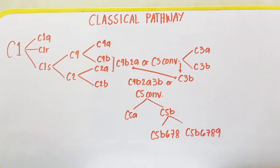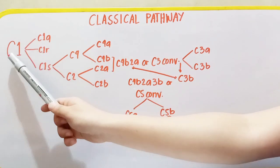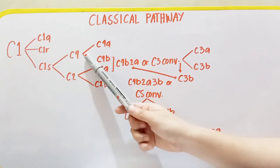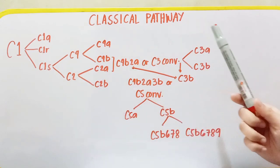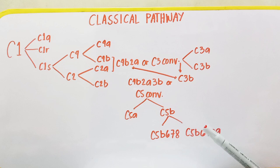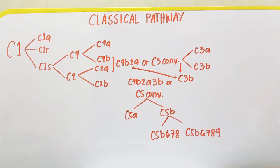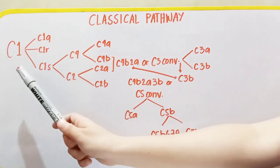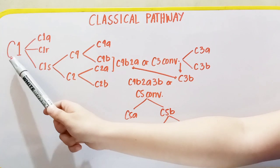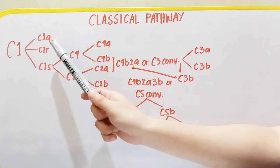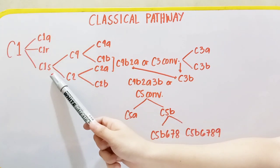Once the Classical Pathway is activated, the order of activation starts with C1, followed by C4, C2, C3, C5, 6, 7, 8, and 9. The C1 splits into C1Q, C1R, and C1S.